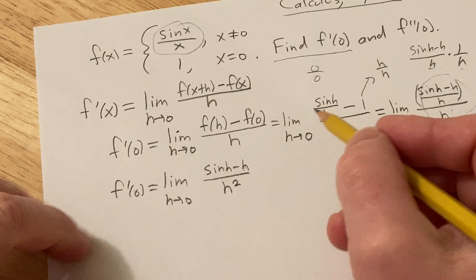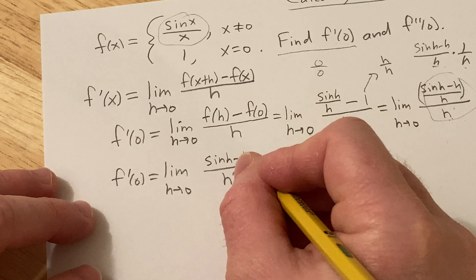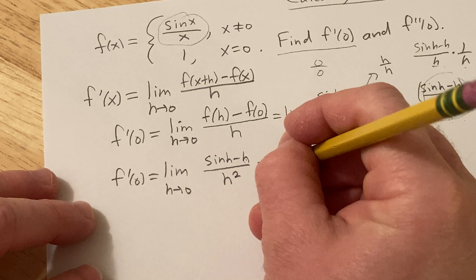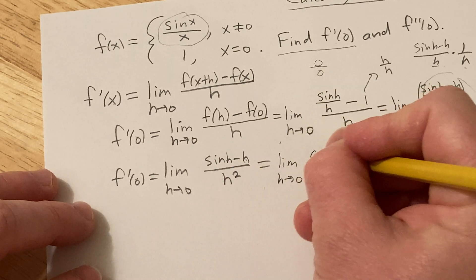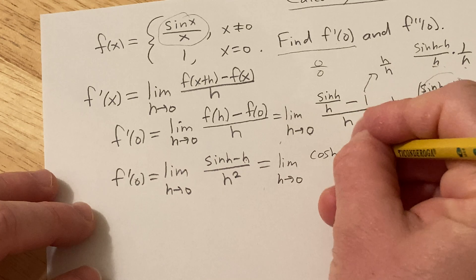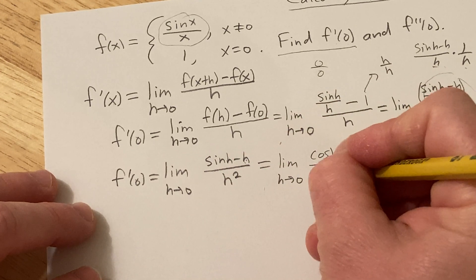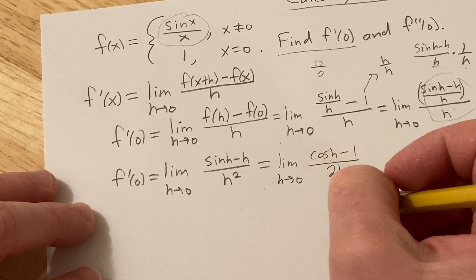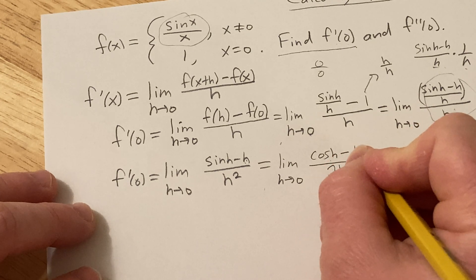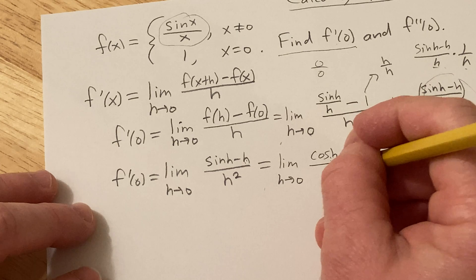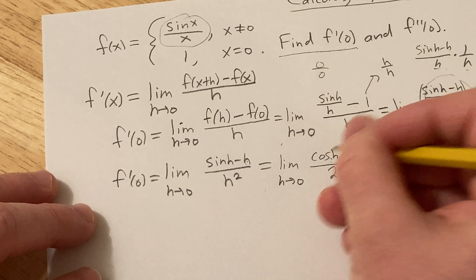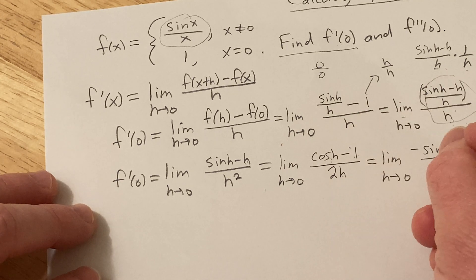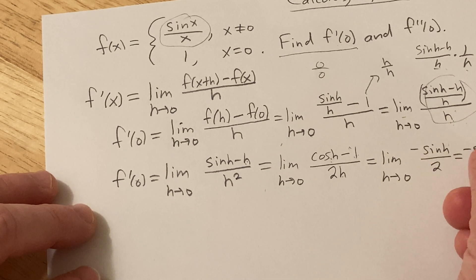Whenever you have a form that's zero over zero, you can use L'Hôpital's rule, which says you can take the derivative of the numerator and the derivative of the denominator. So this is the limit as h approaches zero. The derivative of sine is cosine, minus the derivative of h which is one. The derivative of h squared is 2h. Plugging in zero, you get cosine of zero minus one — that's one minus one — so you get zero on top and zero on the bottom again. Taking the derivative once more: the derivative of cosine is negative sine, the derivative of 2h is two, and the derivative of one is zero. Now plugging in zero, we get negative sine of zero over two — sine of zero is zero — so you get zero.